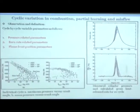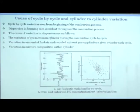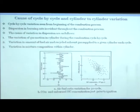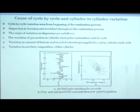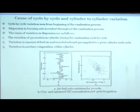Cyclic variability is quite large in the case of spark ignition engines. Cycle-by-cycle variations are seen from the beginning of the combustion process, and dispersion in burning rates is evident throughout. The causes include: variation in gas motion in the cylinder during combustion in every cycle — how the gas moves is different from one cycle to another. Second, there is variation in the amount of air-fuel mixture and recycled exhaust gas.